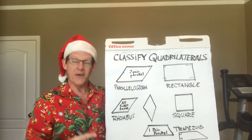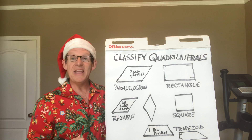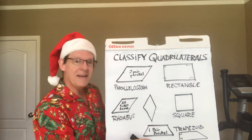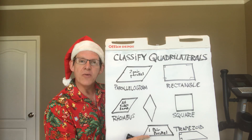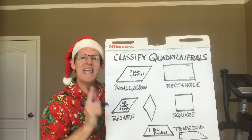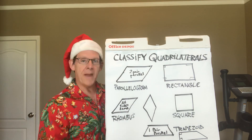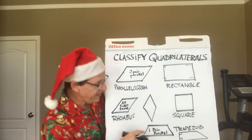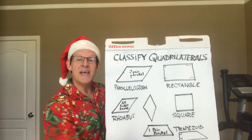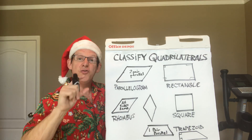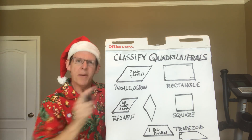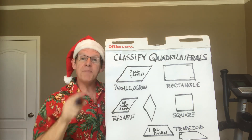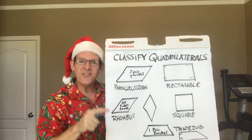There's one more shape we don't want to forget about, and I love the name — it's called a trapezoid. A trapezoid has four sides, but it has only one pair of parallel sides. This one is a trapezoid too; it actually has two right angles. But the key thing is it has four sides with only one pair of parallel sides.